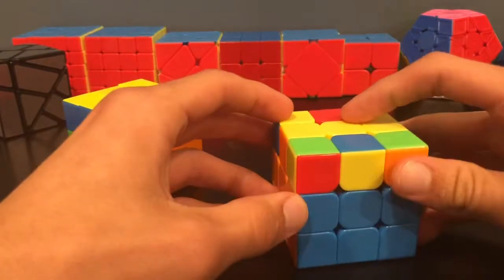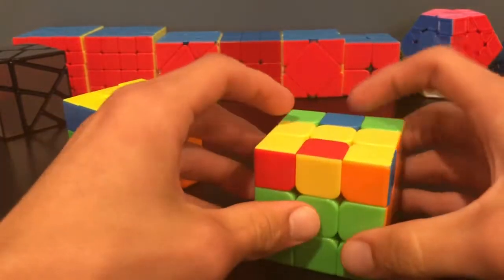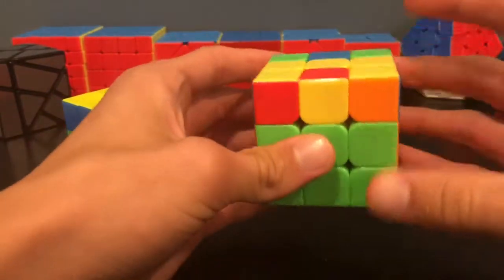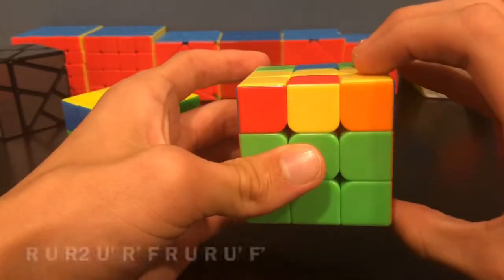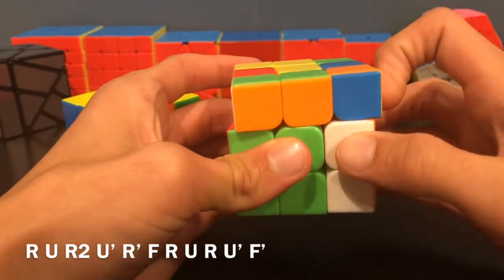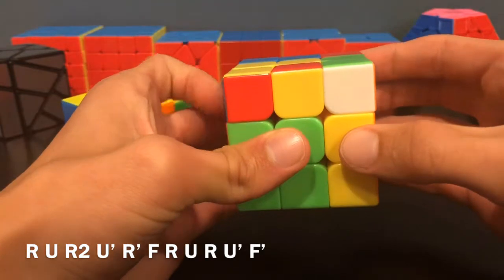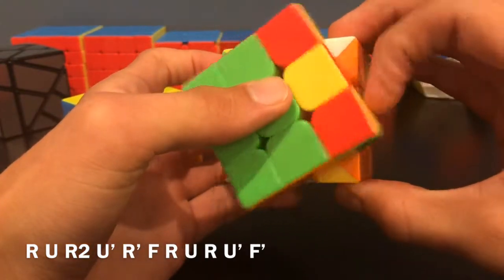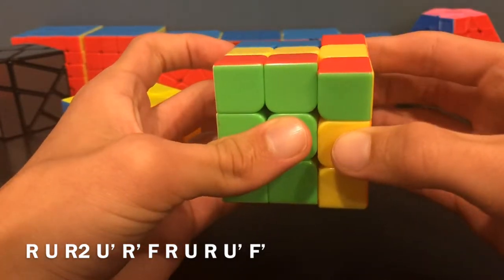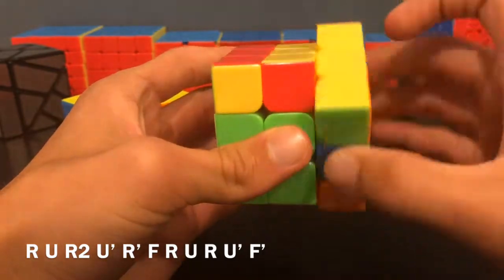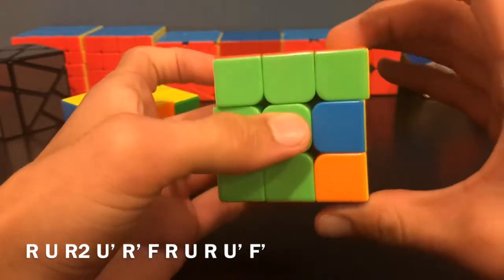For the other case when you don't have a nice bar of three you would hold these two corners in front of you and then do this algorithm: R U R' U' R' F R F' U' F'.